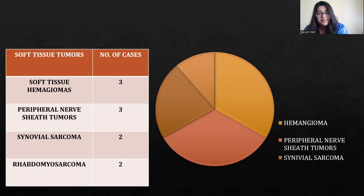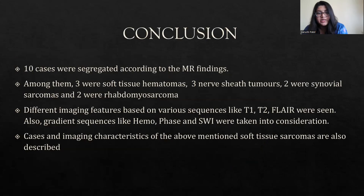Ten cases were examined: 3 were soft tissue hemangiomas, 3 were peripheral nerve sheath tumors, 2 were synovial sarcomas, and 2 were rhabdomyosarcomas, of which one of each has been discussed in this paper. In conclusion, 10 cases were segregated, and different imaging features based on various sequences — T1, T2, FLAIR, and gradient sequences like hemophase and SWI — were taken into consideration, with their imaging characteristics described in the paper.